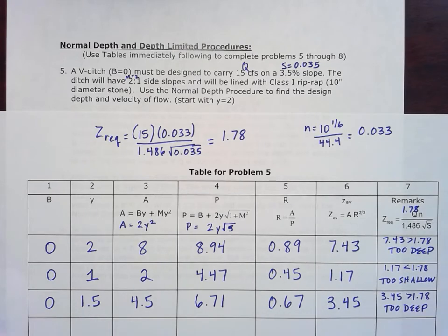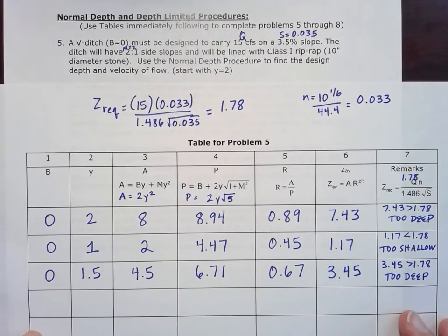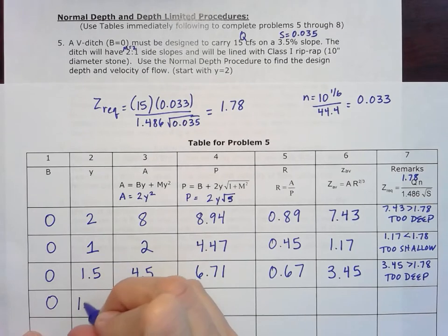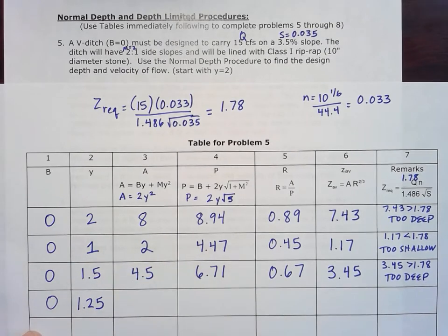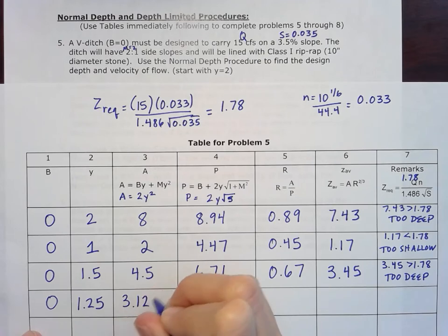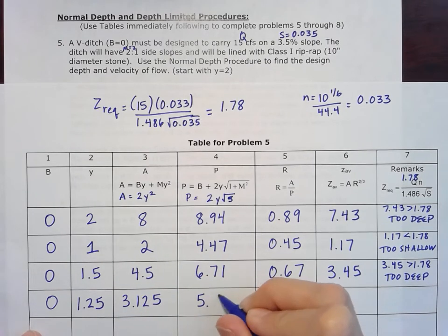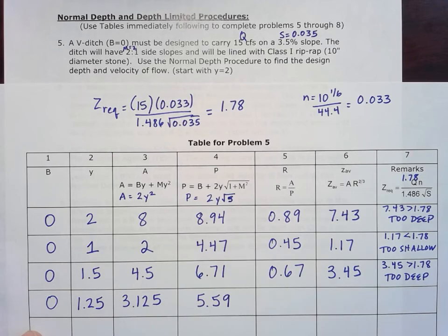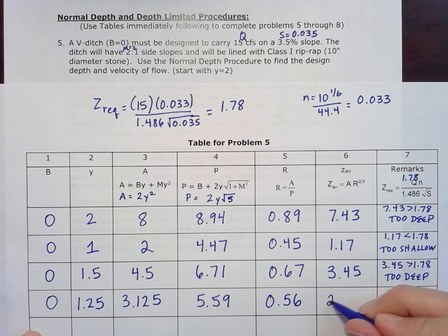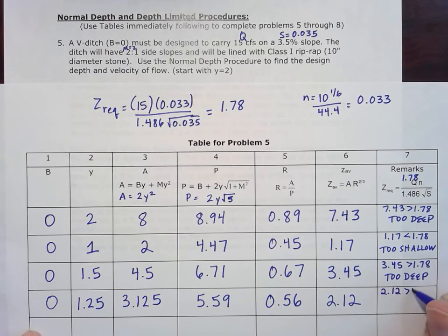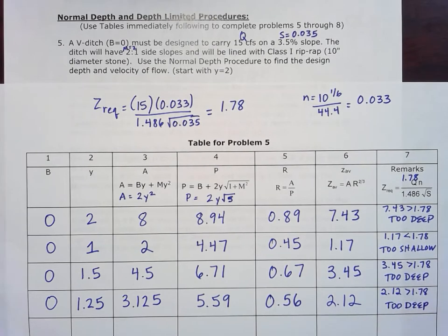Let's decrease that 1.5, I went next to 1.25 and see how that works out. For the area I get 3.125, wetted perimeter 5.59, hydraulic radius 0.56, and a z average of 2.12. Still a little bit too deep there. Definitely getting into the range. Remember we're saying for tests, I'm going to tell you how many iterations to do. Typically, it's just 3. But sometimes we have to ask for 5.